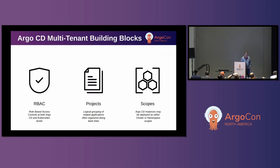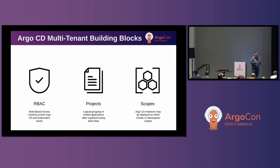From a building block perspective, there are three key components in Argo CD for doing multi-tenancy: role-based access controls, managing who can do what within Argo CD; projects, for managing the organization of applications and application sets; and scopes — cluster scope and namespace scope — that allow you to manage the privileges that Argo CD itself has within the cluster.